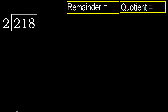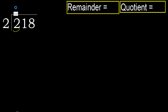218 divided by 2. 2 is not — let's start with 2. 2 multiplied by which number is nearest to 2 but not greater? 2 multiplied by 2 is 4 — 4 is greater. 2 multiplied by 1 is 2 — 2 is not greater.